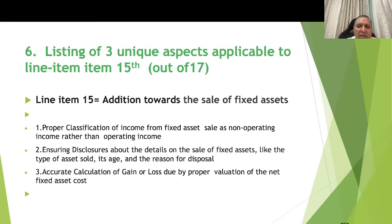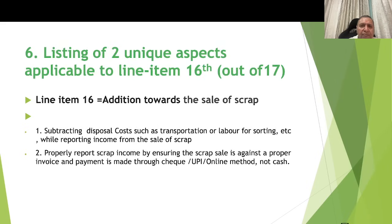For line item 15 — addition towards sale of fixed assets — aspects include: proper classification of income from fixed asset sales as non-operating income rather than operating income; ensuring disclosures about details of the sale — asset type, age, and reason for disposal; and accurate calculation of gain or loss through proper valuation of net fixed assets cost. For line item 16 — sale of scrap — aspects include subtracting disposal costs such as transportation or labor costs for sorting while reporting scrap income, and properly ensuring scrap sale is against a proper invoice with payment received through check, UPI, or online method — not by cash.